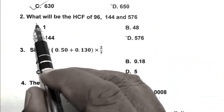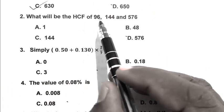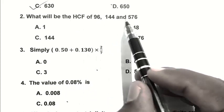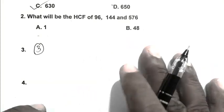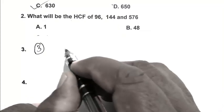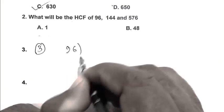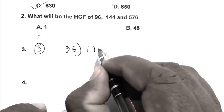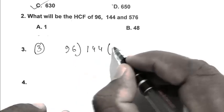Question number 2. What will be the HCF of 96, 144 and 576? We can calculate the HCF by division method. So we divide 144 by 96.